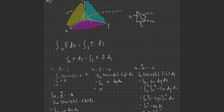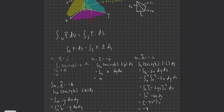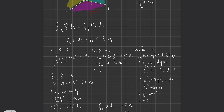For surface S3 with normal negative i, substituting into the equation: the integral over S3 of (2z·i + y·k) dot (negative i) gives negative 2z dy dz. The double integration limits are y from 0 to 2 and z from 0 to 2. Solving this gives the answer for this surface as negative 4.